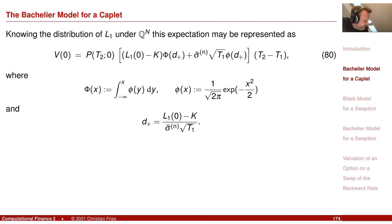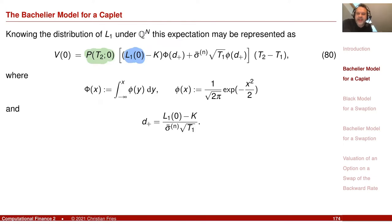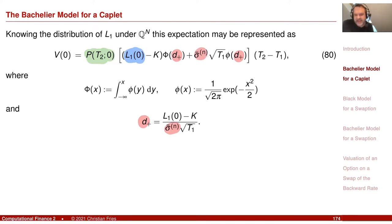In the formula we have in front our numeraire observed today, since this is the units in which we pay. Then we have our index — the martingale — minus the strike observed today, and a few parameters involving the model parameter sigma. Sigma occurs inside the d-plus and d-minus terms, and we have the density of the normal distribution appearing here.